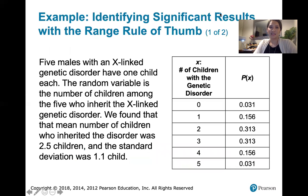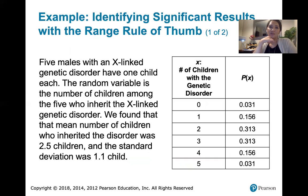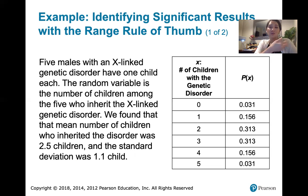We've got this probability distribution again. If we have five males with an X-linked genetic disorder and they have one child each, the random variable is the number of children among the five who inherit that disorder. It might be that zero, one, two, three, four, or five children inherit the disorder. Corresponding to each of those values of the random variable X, we have probabilities listed in the right column.